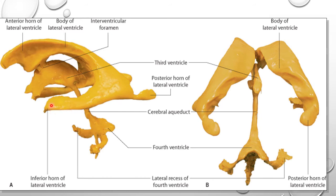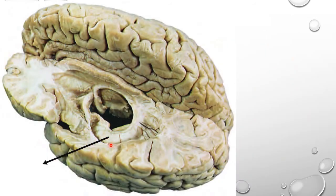After plastination and separation of the lateral ventricles, the anterior end of the hippocampus is clearly visible. The anterior end of the hippocampus presents a bulbous extremity marked by a number of oblique grooves; the whole feature resembles the paw of an animal, hence it is called pes hippocampi.